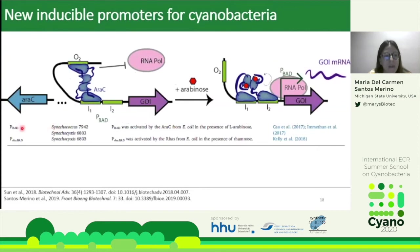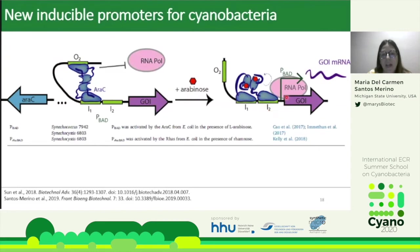The PBAD promoter has been studied in E. coli for many years. In the absence of arabinose, the repressor AraC binds to regions of the promoter and the operator, forming a secondary structure that blocks RNA polymerase. When arabinose is present, it binds to AraC, releasing this secondary structure and allowing part of AraC to bind to region I2, permitting RNA polymerase to bind and transcribe the gene of interest.